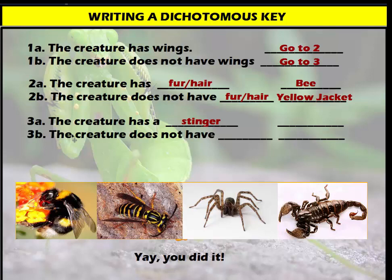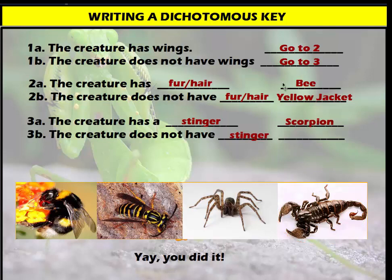Couplet 3a reads: the creature has a stinger. Couplet 3b — the opposite — reads: the creature does not have a stinger. Reading the key: the creature without wings but with a stinger is the scorpion; the creature without wings and without a stinger is the spider. That completes our dichotomous key. Remember: use observable characteristics, write yes or no question statements to sort, then turn those into paired statements to identify each specific organism.